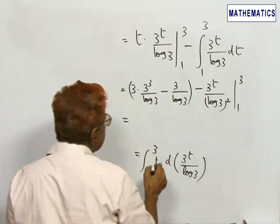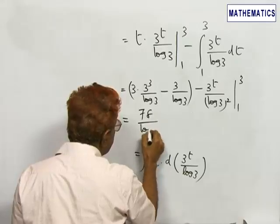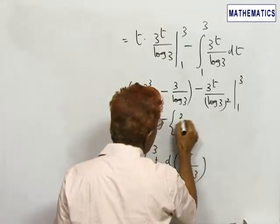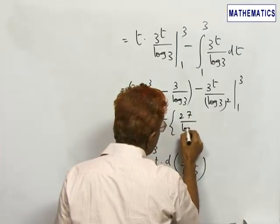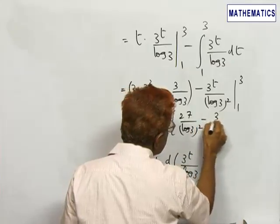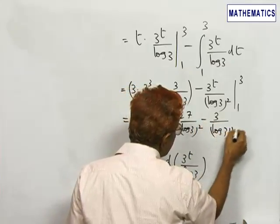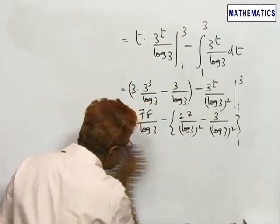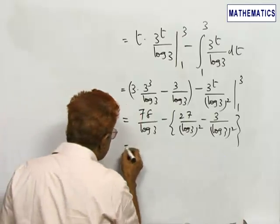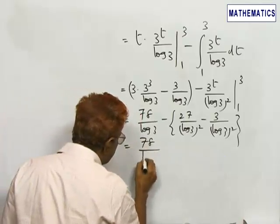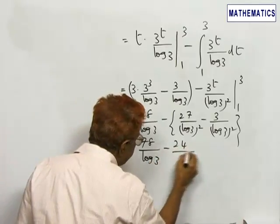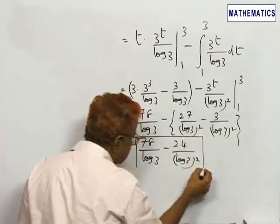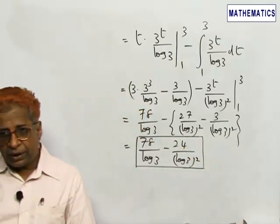This is 78 by log 3 minus 28 by log 3 whole square minus 3 by log 3 the whole square. That is 78 by log 3 minus 24 by log 3 the whole square. Therefore, option 1 is the right option.